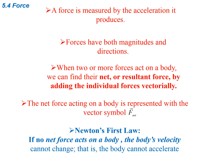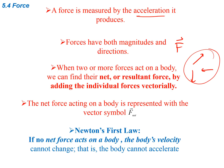A force is measured by the acceleration that it produces, so we measure forces by looking at the acceleration, which means there's a relationship between force and acceleration. Forces have both magnitudes and directions, so forces are vectors — written as big F with the vector symbol over it. When two or more forces act on a body, we find their net or resultant force by adding all the individual forces vectorially, which helps us figure out where the acceleration is heading.